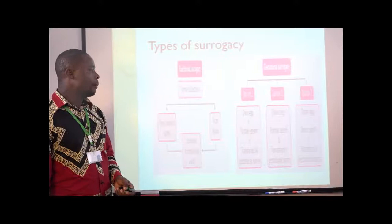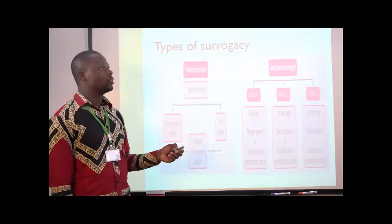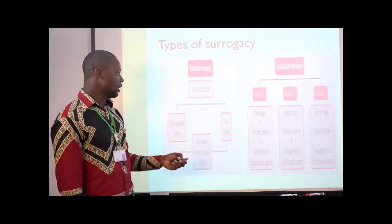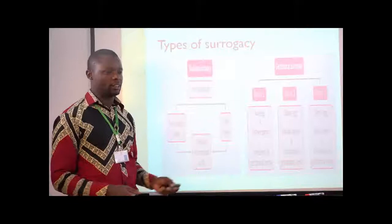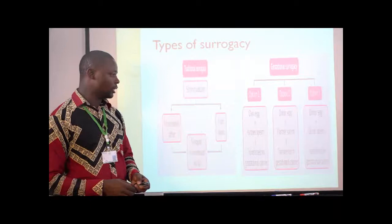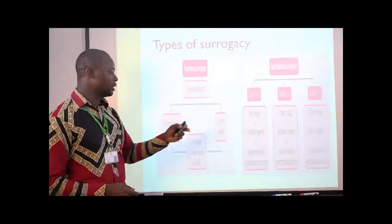In option two, one of the intended parents cannot produce an egg, so the egg will be obtained from a donor. Fertilization is made outside of the body and the embryo is transferred to the gestational carrier using in vitro fertilization. In option three, neither parent has the ability to produce a sperm or an egg, so both are obtained from donors, fertilized via in vitro fertilization, and the embryo is transferred to the gestational carrier.